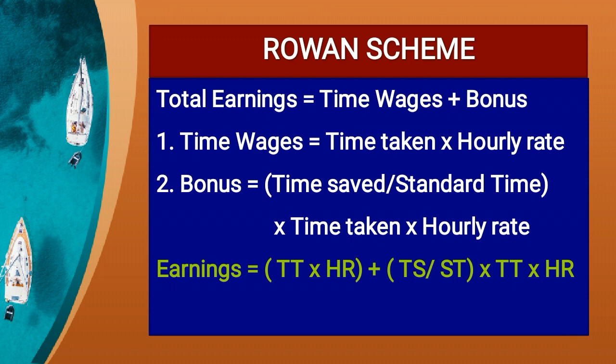Here we are talking about total earnings: time wages plus bonus. Time wages is how much work we do - time taken multiplied by hourly rate. Bonus is saved time. For the Rowan Scheme, earnings = Time Taken × Hourly Rate, plus Time Saved divided by Standard Time, multiplied by Time Taken × Hourly Rate.